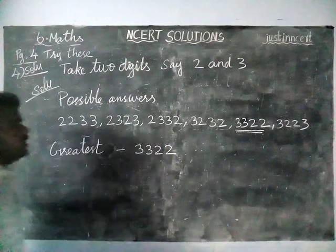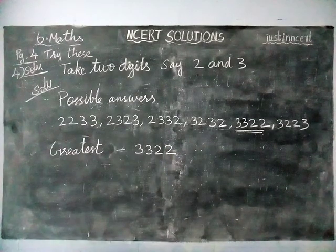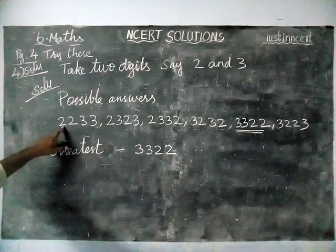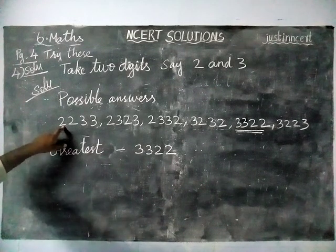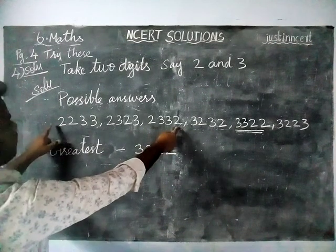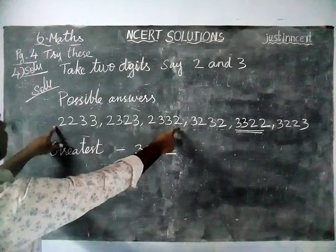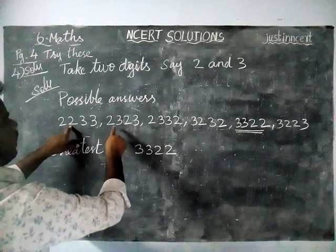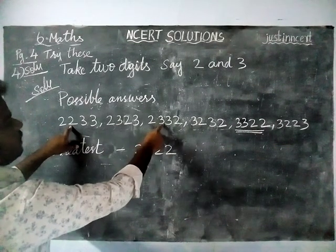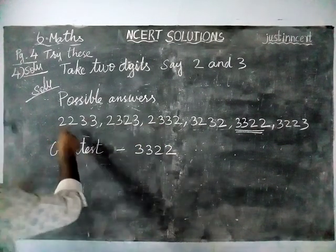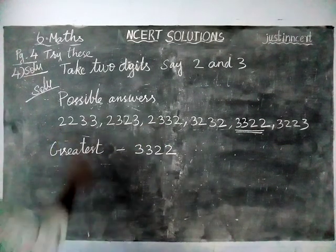And for the smallest number, we have to see the first digit — the thousands place. 2 is there. Next, looking at the remaining options, the 100th digit: 2 is smaller than 3, so the smallest number is 2233.